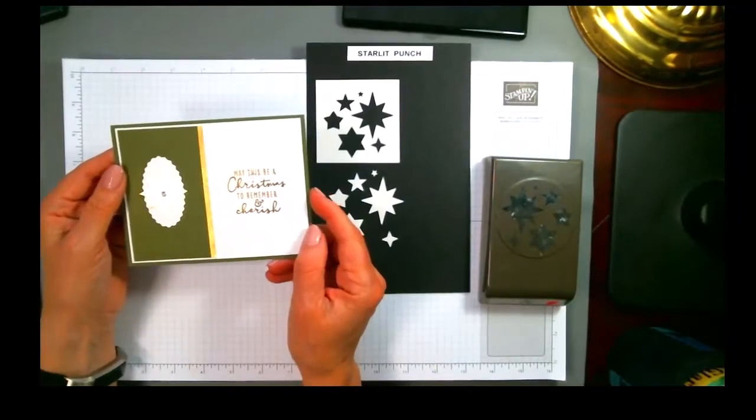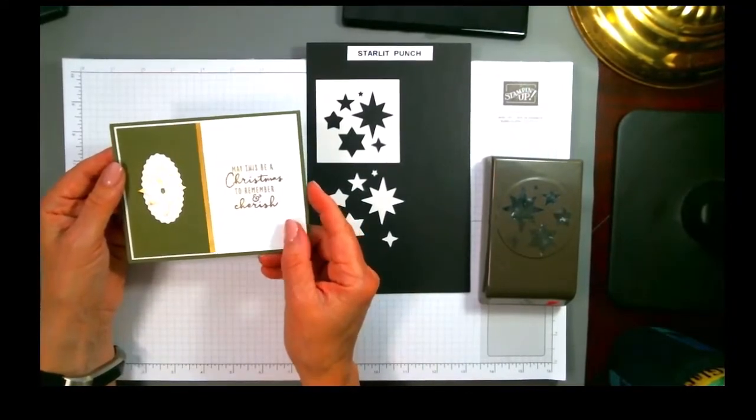All right here is the first of the eight samples. It's just a real quick little Christmas card. I did some embossing on the green behind and then this is just the largest star out of the punch and I put a little rhinestone in the center so it's very easy and quick to make a card with this star punch. This one uses just one of the stars.